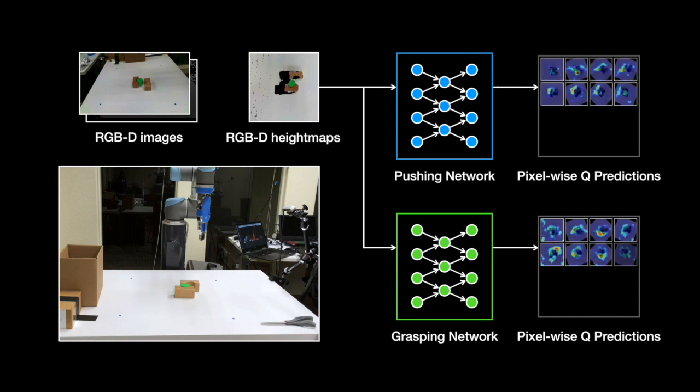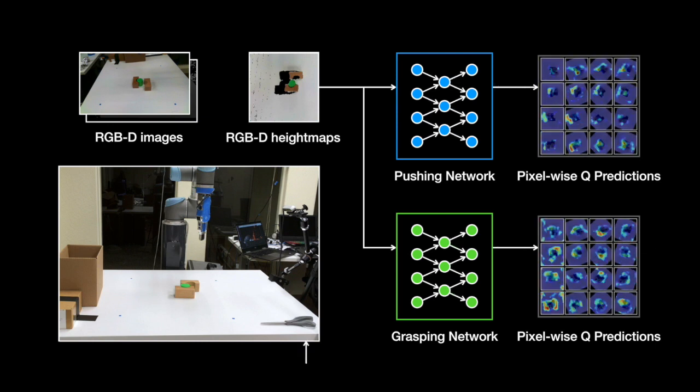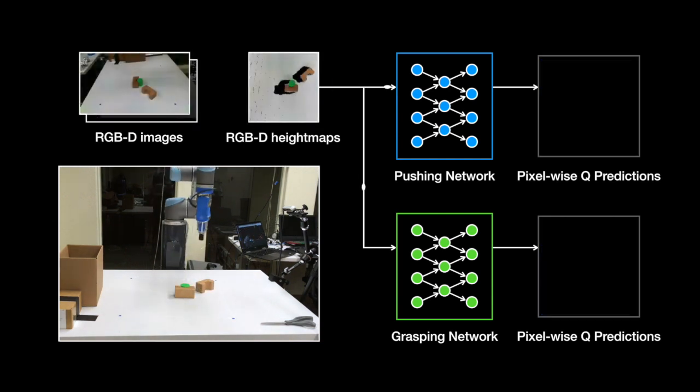Both the pushing and grasping networks are trained jointly as a single Q function approximator under a standard off-policy online Q learning framework. Rewards are automatically provided from successful grasps.